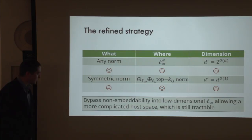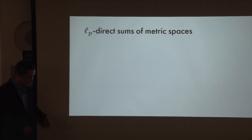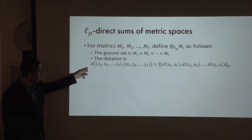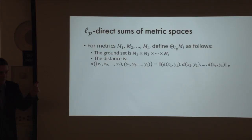Let's start executing the plan. First, we need to understand the new space we will try to embed into. For this, we need the notion of L_p direct sums of metric spaces. Suppose you have a bunch of metric spaces; you consider the Cartesian product equipped with the following metric: the distance between two tuples of points is computed by taking distances for each copy and then taking the L_p norm of them.